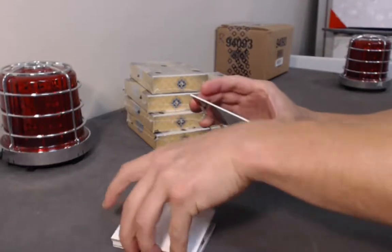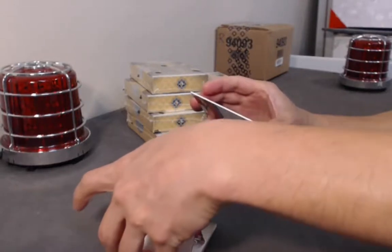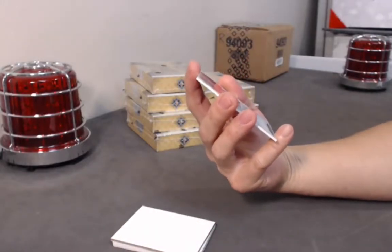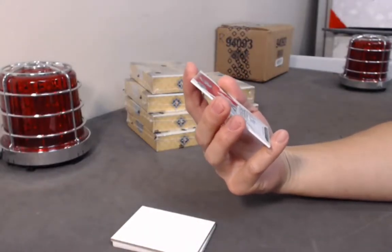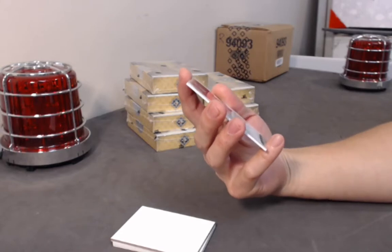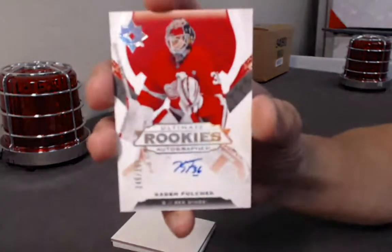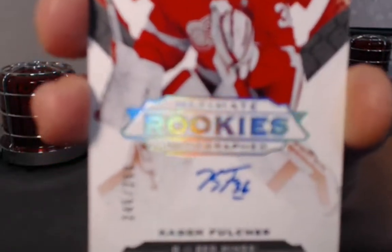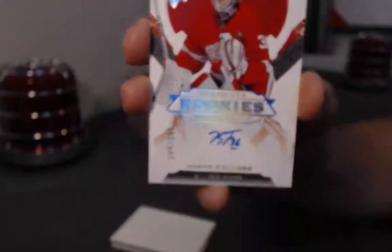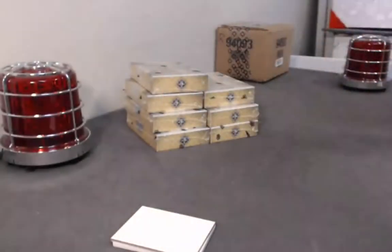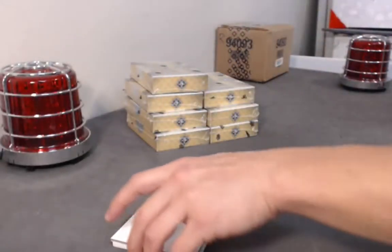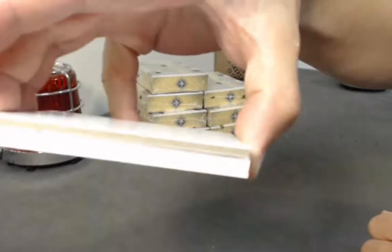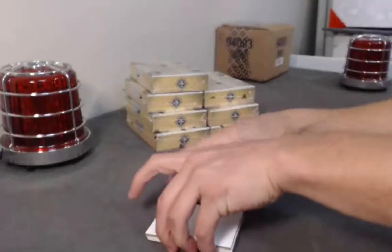We have a Matthew Barzal base. Next we have Ultimate Rookies autograph, base rookie autograph out of 299, Red Wings goalie Caden Fulcher. Tiny little autograph there, micro print. Nice hit for Fulcher.